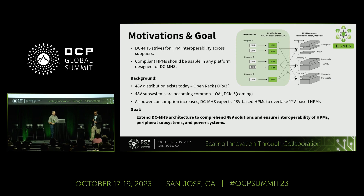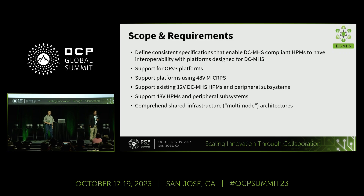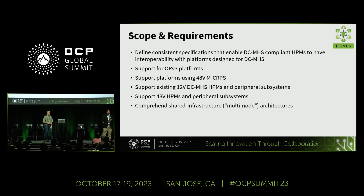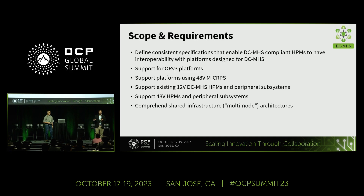From a scope and requirements standpoint, we want HPMs that can drop into any DCMHS-compliant system. We want to support directly Open Rack v3 platforms, but it's not just Open Rack — if you have local 48-volt power supplies, the DCMHS specification for power supplies does support 48-volt output. We still want compatibility within platforms; you may have a platform that takes a 12-volt or 48-volt HPM and want to switch between them. Likewise with peripherals — some will continue to be 12-volt based, others will be 48-volt based.